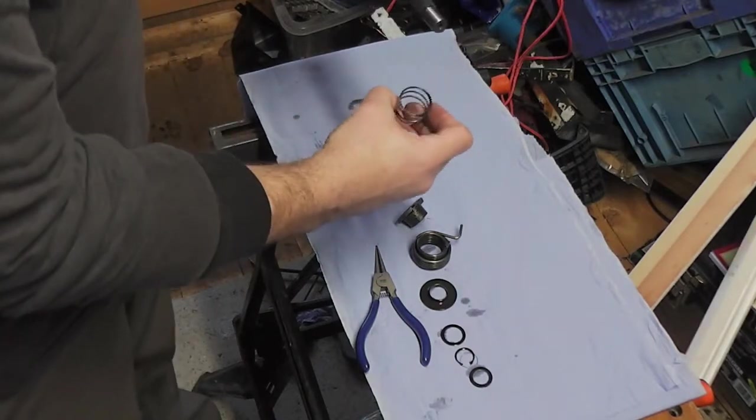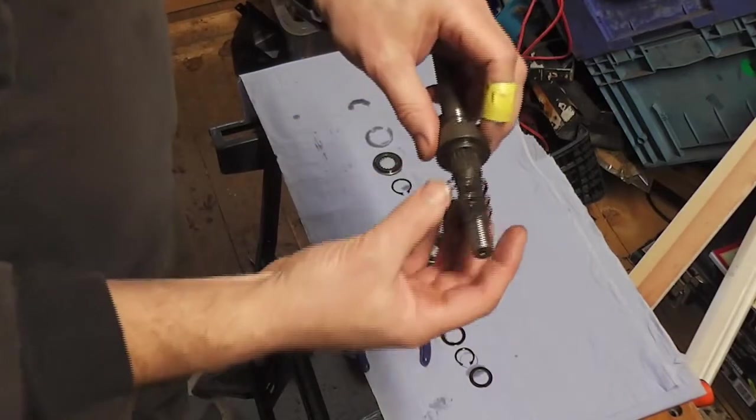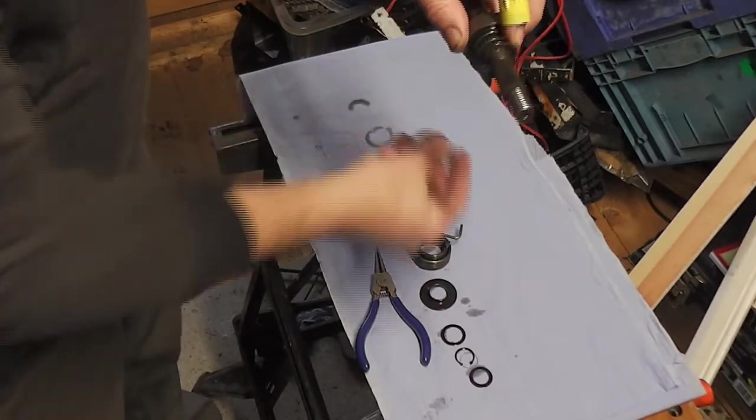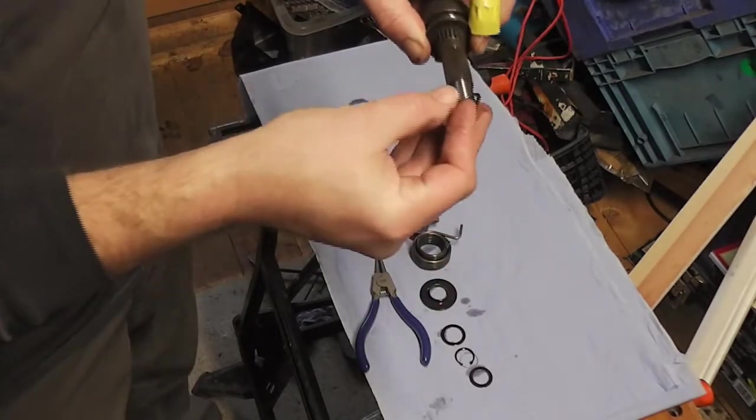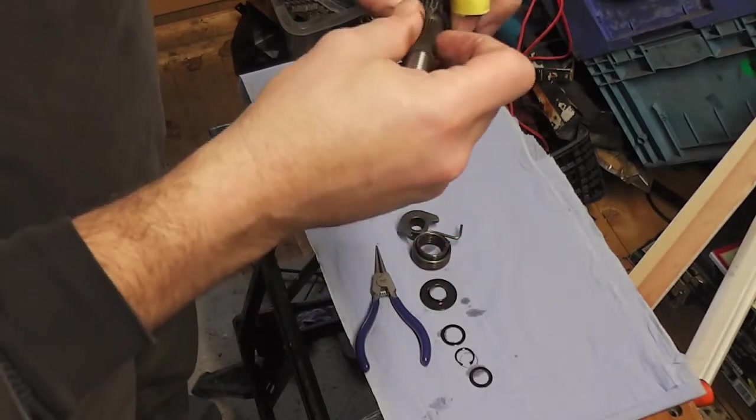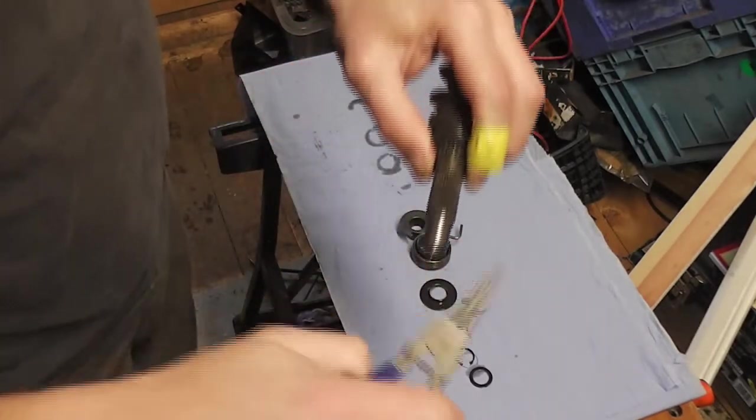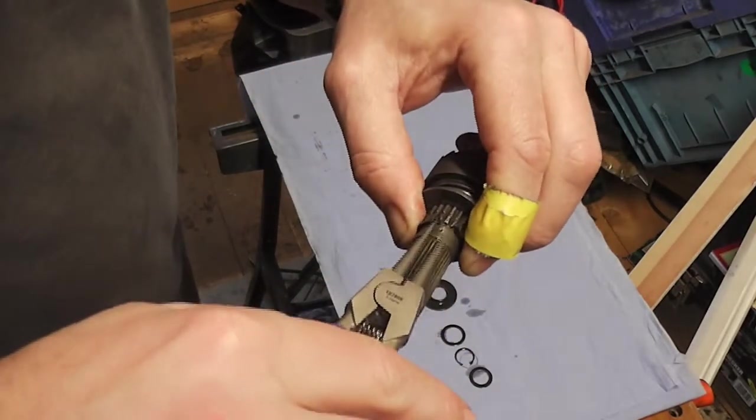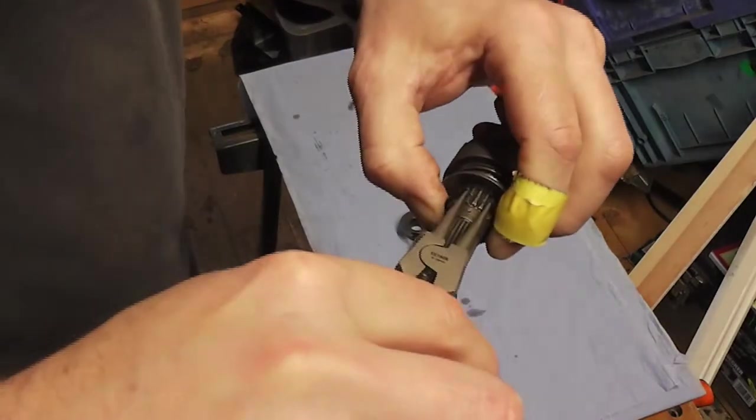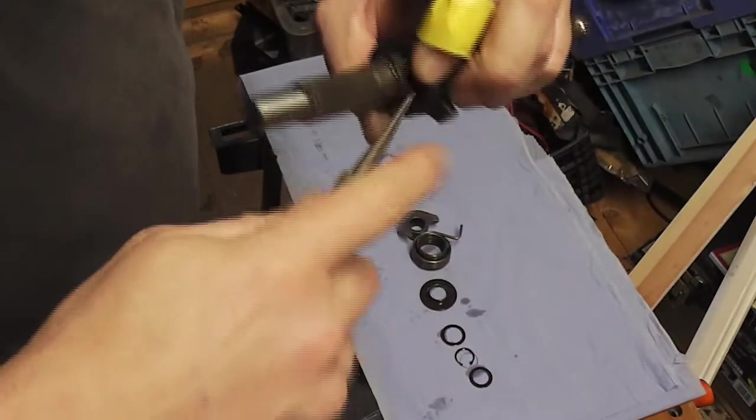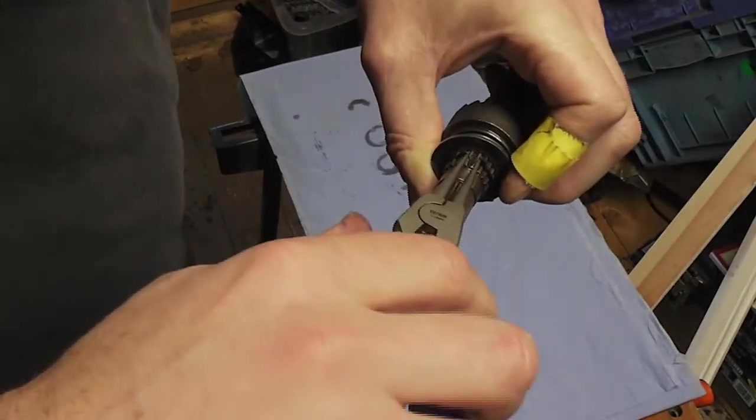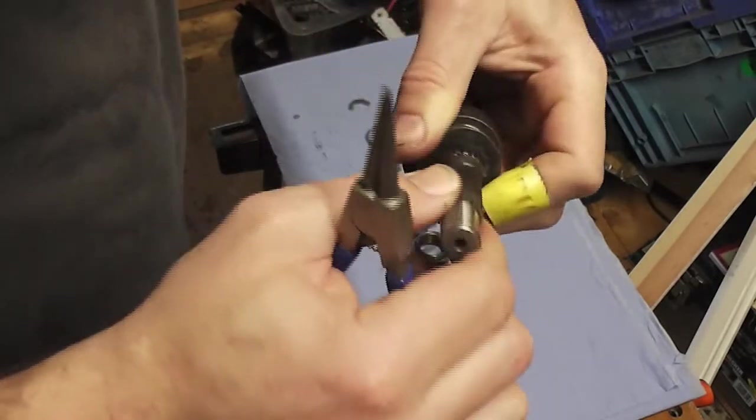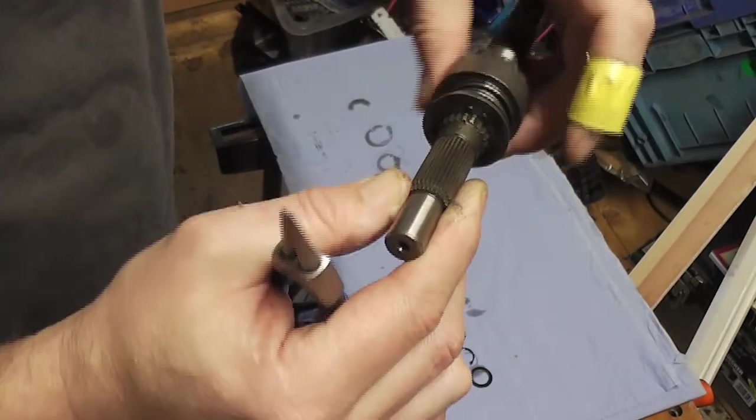Then you can fit the spring, then this spacer, and this is held on with another circlip. So try and hold that. Hold this in place and put this circlip on there. Check that the circlip is in the groove all the way around.